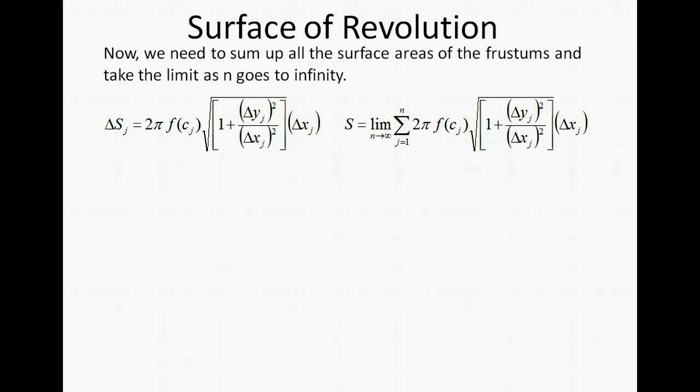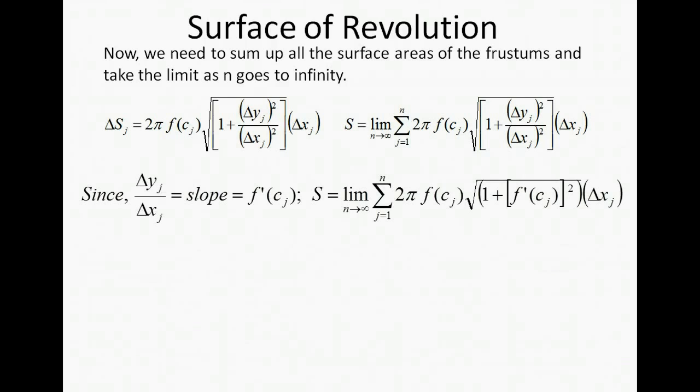Now we need to sum up all the surface areas of the frustums and take the limit as n goes to infinity. Since the slope is equal to Δy over Δx we can replace that with f'(c). The derivative is the slope. And it's going to be squared because Δy and Δx were both squared.